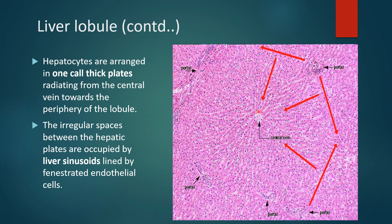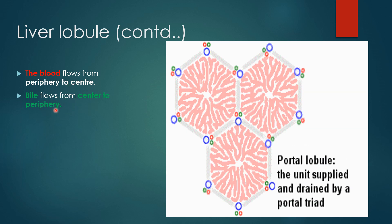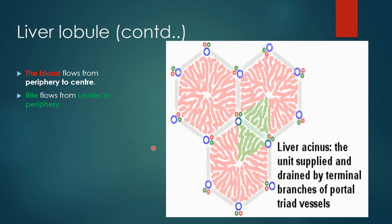The sinusoidal spaces are lined by fenestrated endothelial cells and are present at the margins of the classic lobule. Portal areas are at each corner. The direction of blood flow is from periphery to center, while bile flows in the opposite direction — from center to periphery. So the direction of bile is centrifugal and the direction of blood is centripetal.